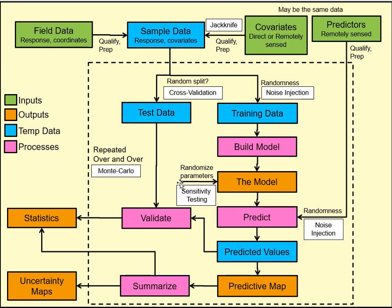Monte Carlo methods repeat the modeling process over and over again — the name comes from the Monte Carlo gambling casino in southern France. By repeating with slightly different conditions — different noise levels and different data splits — we build robustness into our models and can also generate uncertainty maps.